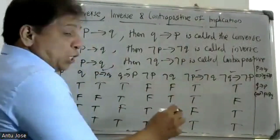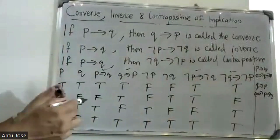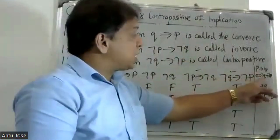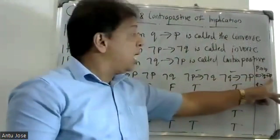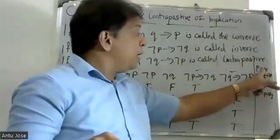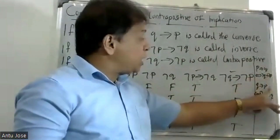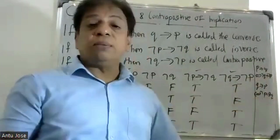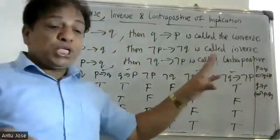One statement and its contrapositive are logically equivalent. That is, P conditional Q is equal to negation Q conditional negation P.